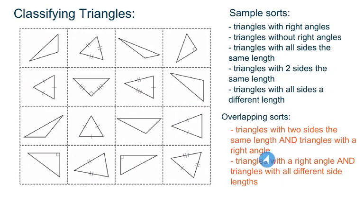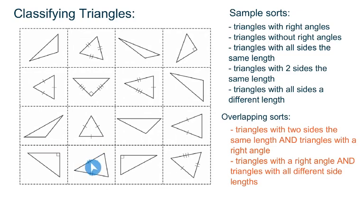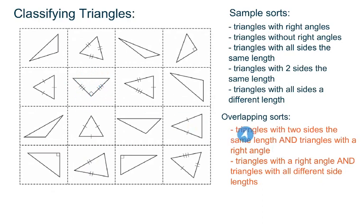Here are some overlapping sorts that I came up with. I could put triangles in a group that have two sides the same length and also have a right angle. If you take a look at the different possibilities, triangles with two sides the same length that also have a right angle — this one would fall into that overlapping sort.